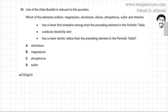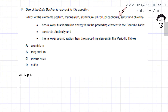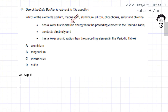The following past paper question reads that the use of the data booklet is relevant to this question. Which of the elements — sodium, magnesium, aluminium, silicon, phosphorus, sulfur, and chlorine — are consecutive elements in the third period. Which of the elements satisfies the three statements? The first statement: has a lower first ionization energy than the preceding element in the periodic table?